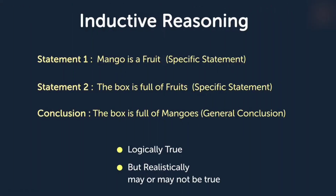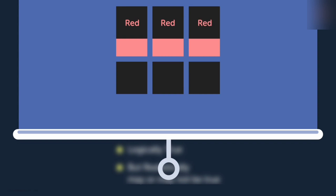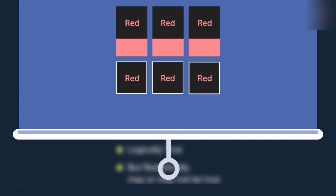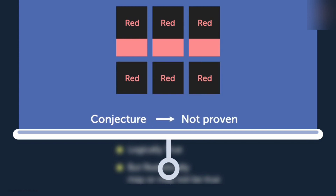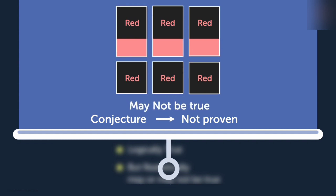Now let's go back to inductive reasoning. Did you know that inductive reasoning is frequently used in mathematics? By observing the pattern that exists in a particular case, we induce a general conclusion from that outcome. The conclusion we arrive at based on inductive reasoning is called a conjecture. Conjecture is a hypothesis that has not been proven. Just because we observe a pattern in many cases doesn't mean it holds true for all cases. Conjectures must be proved for that particular case.